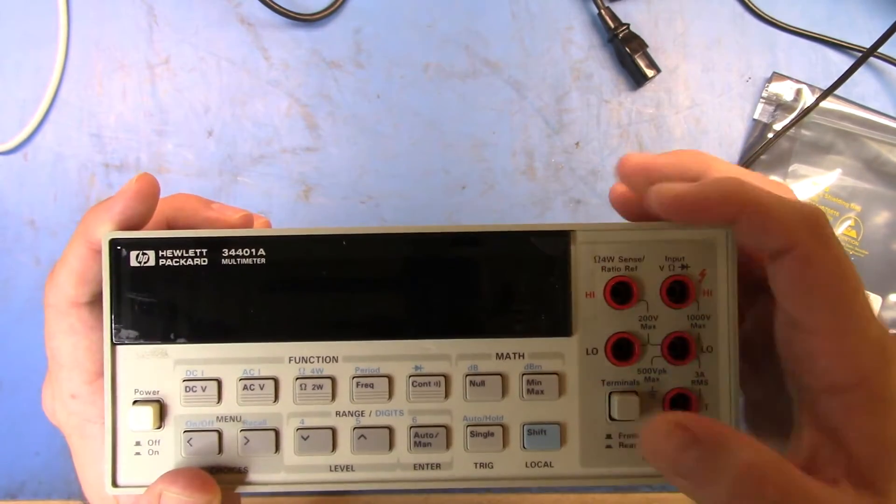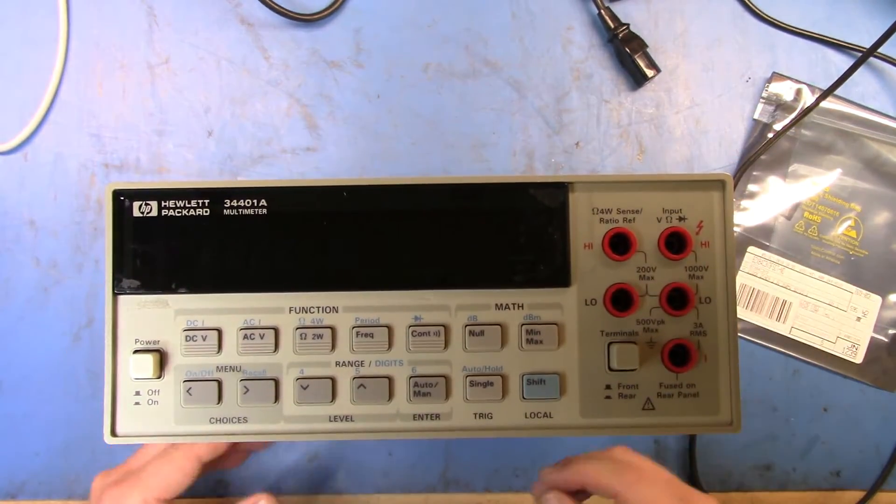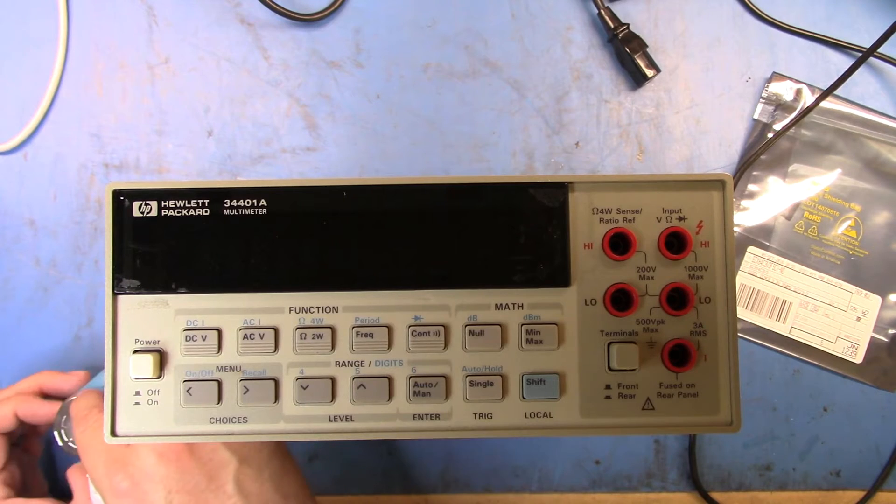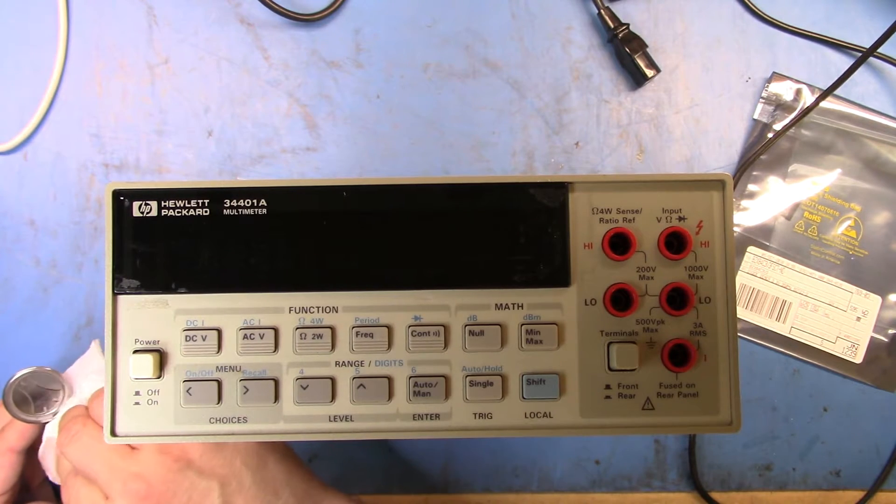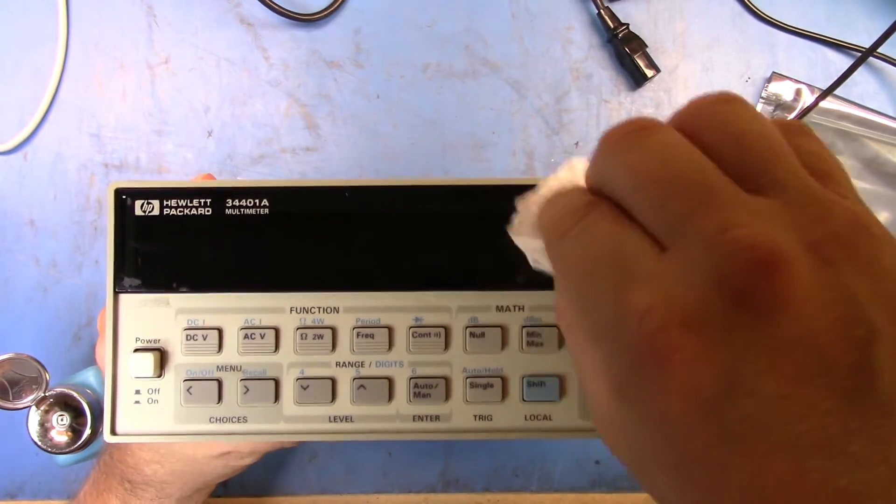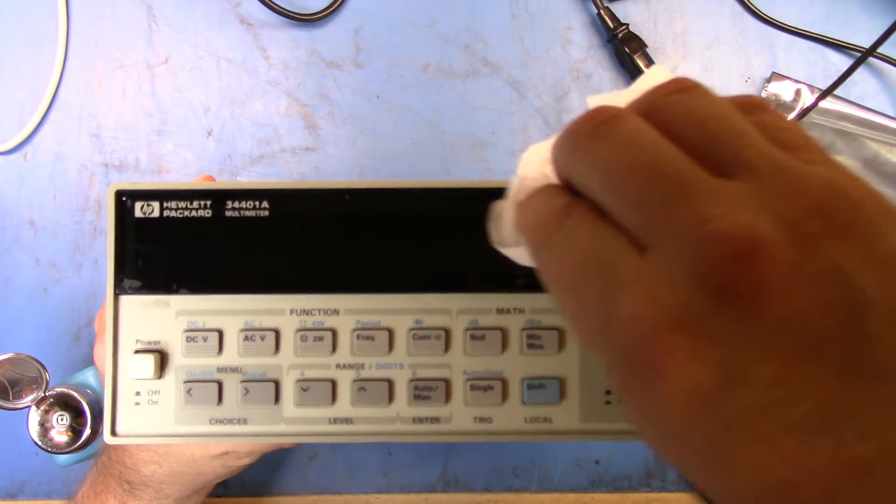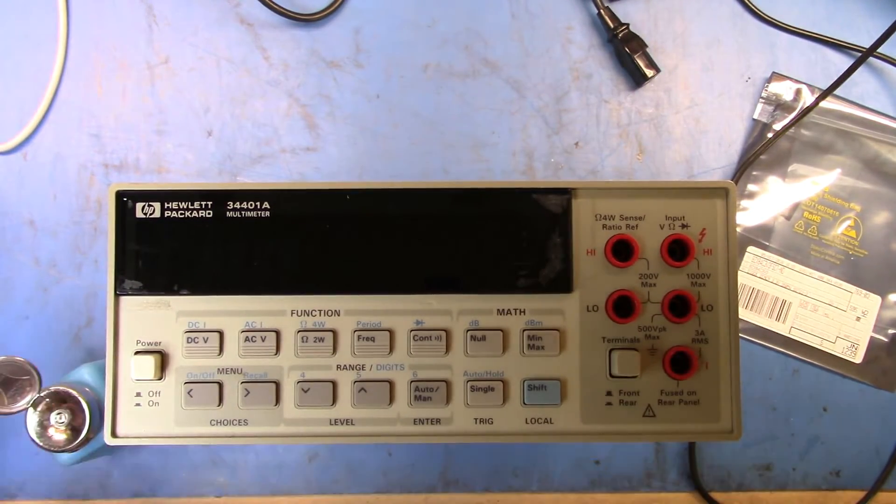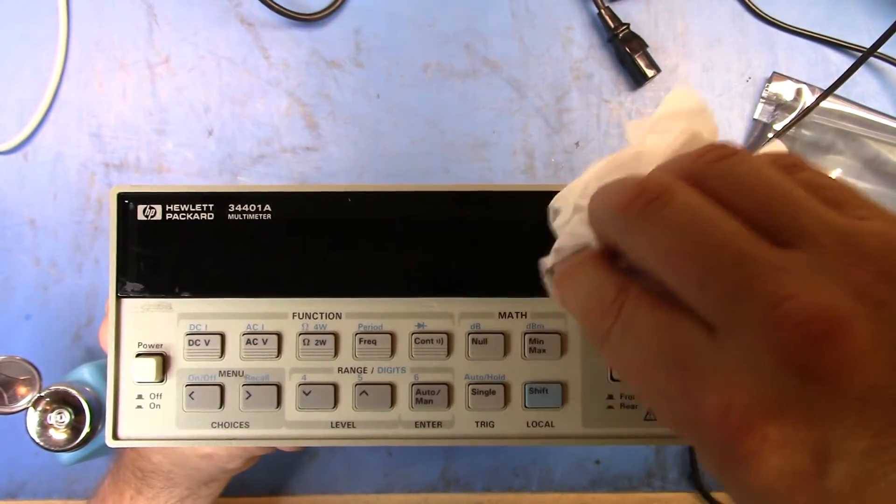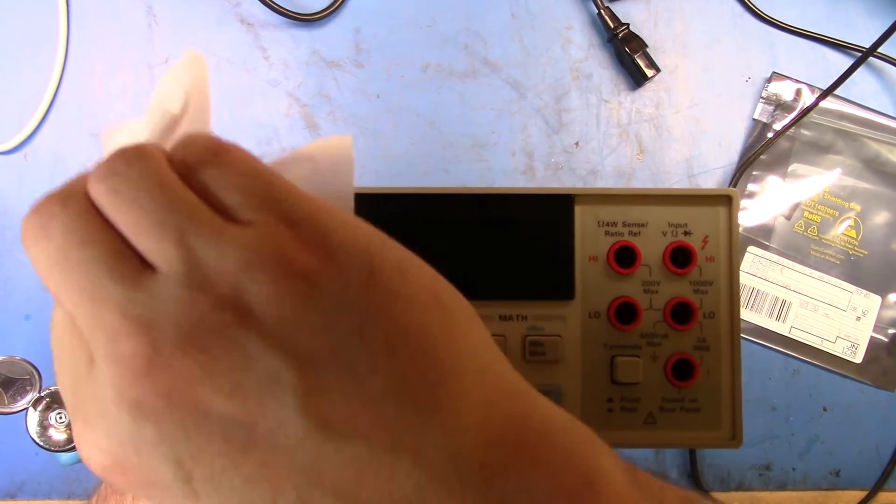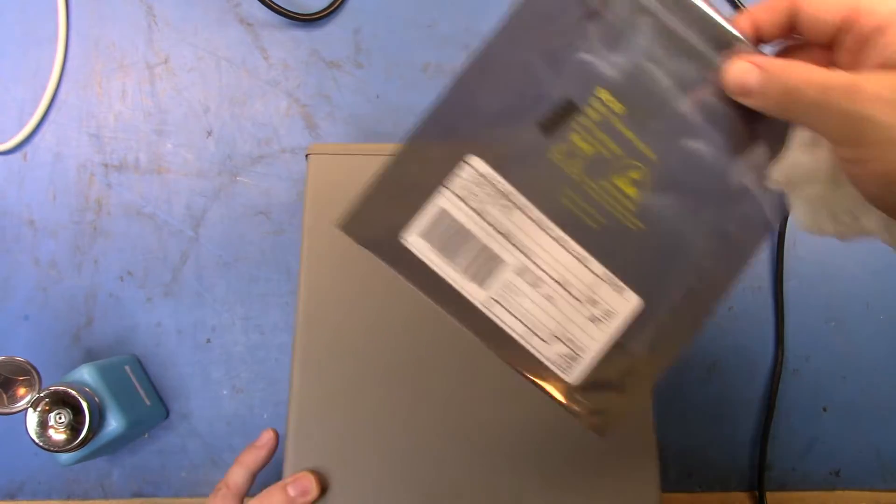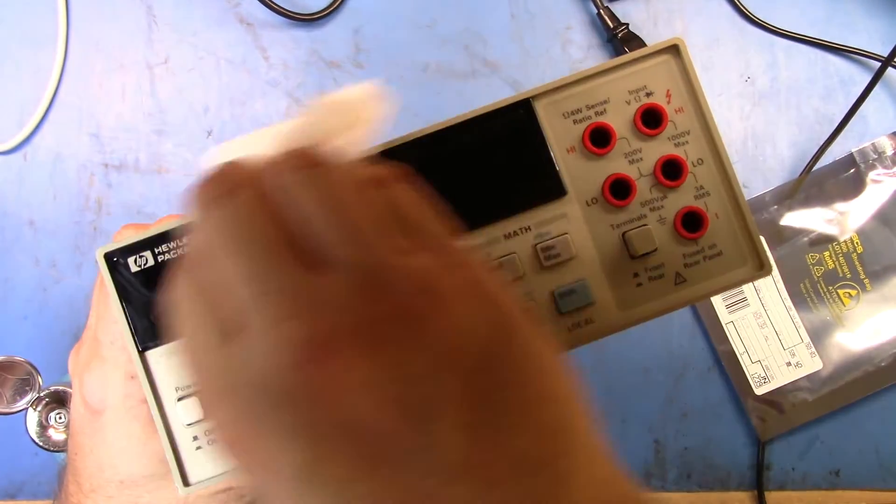Well good evening, this is just a quick follow-up to my 34401A video where we had a failure of the Zener CR305. What I've just noticed is there's a bunch of tape residue here on the front panel.